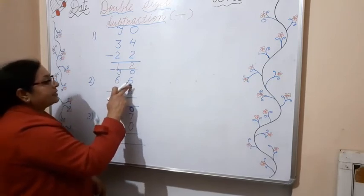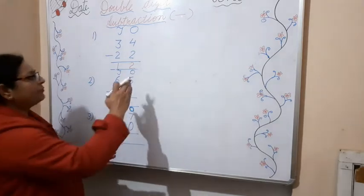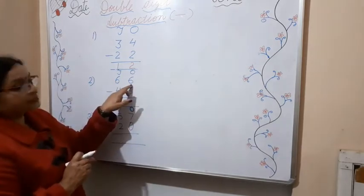Next example is 66 minus 46. So first of all, we will start from the ones side.